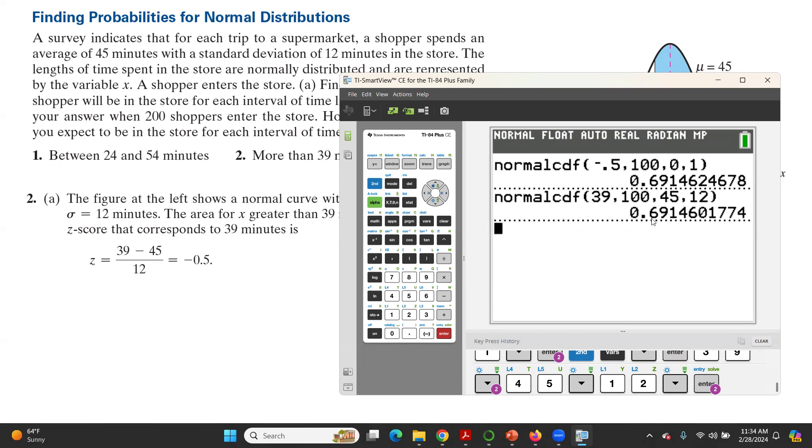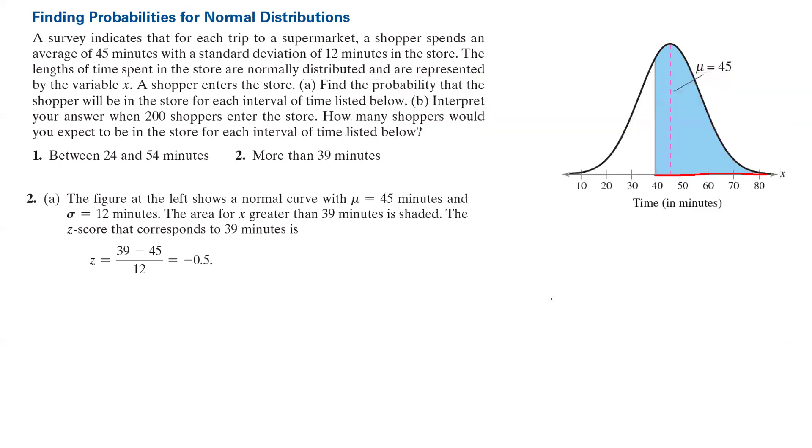Hit paste twice, and as you can see, you get the exact same probability, 0.6915. So the probability that a random shopper spent more than 39 minutes in the store, or the probability that x is more than 39 minutes, or the probability that z is more than negative 0.5, is 0.6915, or 69.15%.